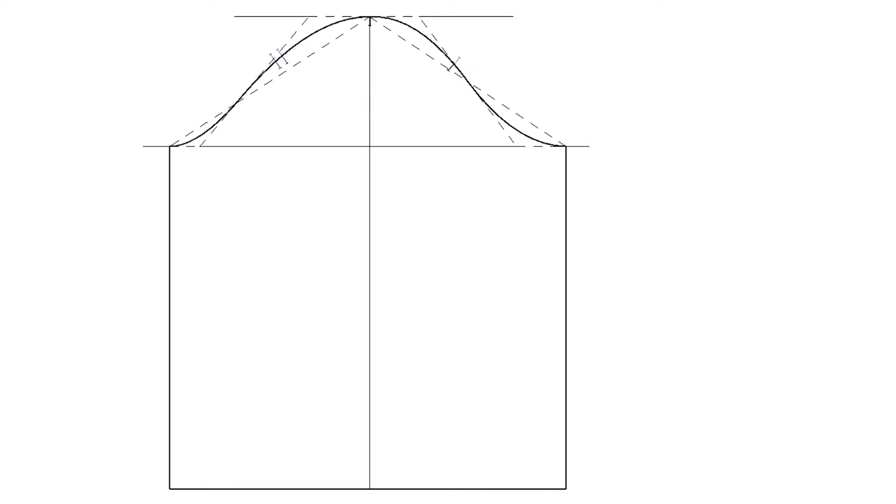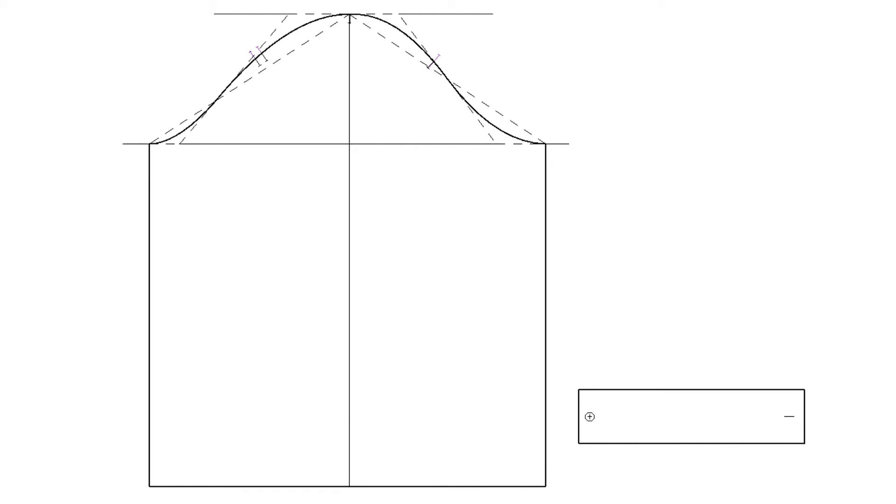Before we drop the sleeve hem, let's drop the sleeve cuff first. We have to determine the cuff length. For example, I want the cuff nine inches and a half finished. When I button up, the cuff circumference will be nine inches and a half.